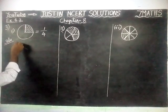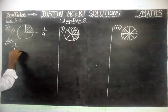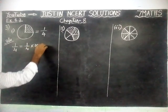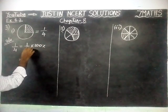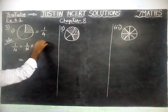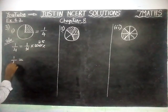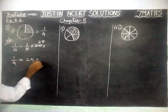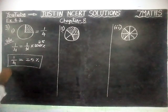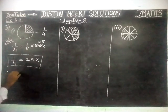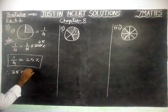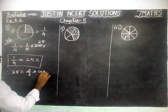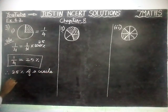Now we are going to find the percentage for that. 1 by 4 is equal to 1 by 4 into 100%. 25 fours are 100, so 1 by 4 is equal to 25%. Therefore, 25% of the circle is colored.